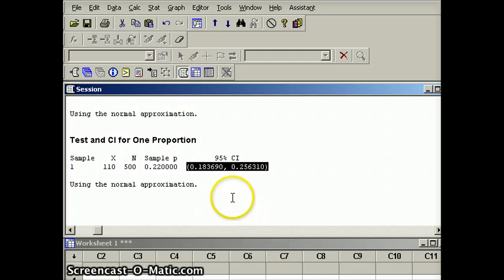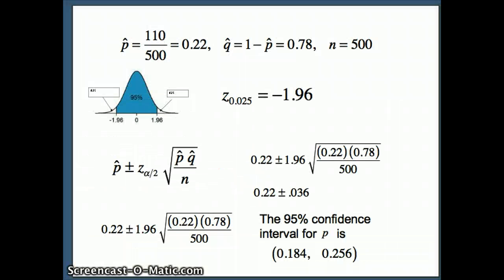We don't know what the proportion is for all intro students to get A's, but we think that that proportion is somewhere between 0.1837 and 0.2563, which you'll notice is essentially the same as the number we had last time, 0.184 and 0.256. So our results from Minitab verify the results we had from our formula.